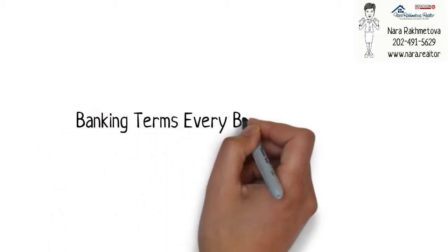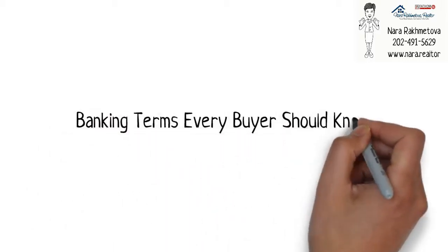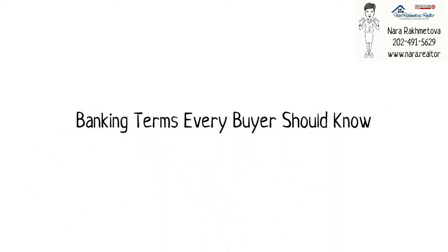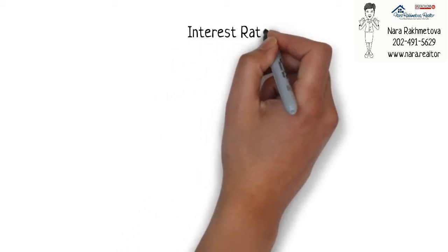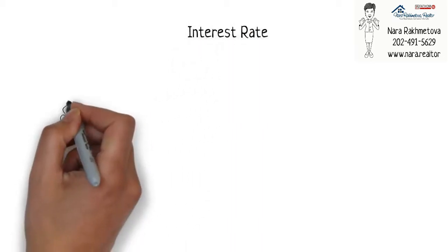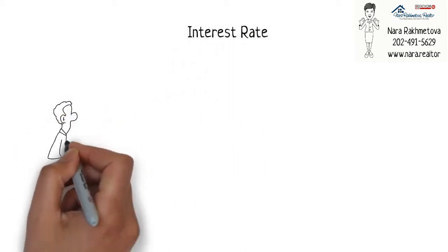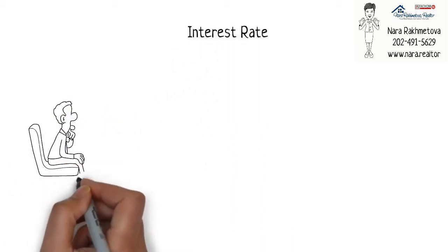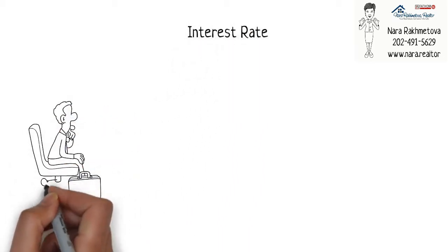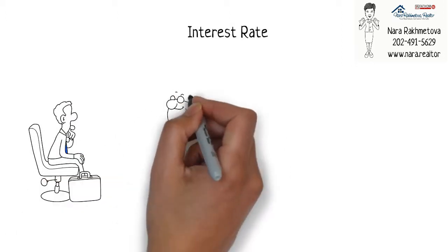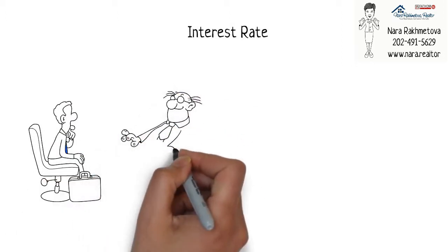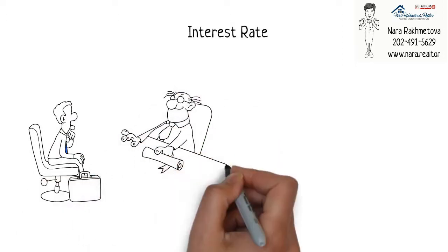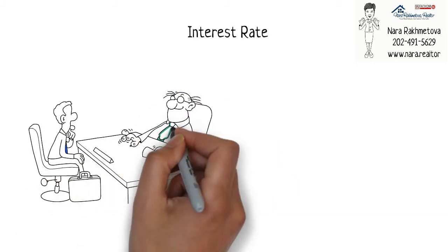If you are a first-time homebuyer, here are some banking terms you should become familiar with. Interest Rate: The interest rate is the amount a lender charges a borrower to obtain a loan. This is usually expressed as a percentage of the total amount loaned.